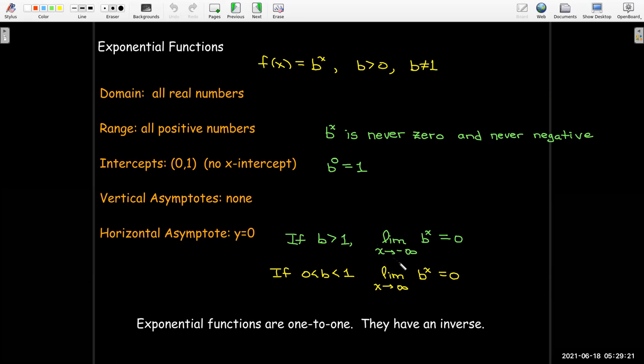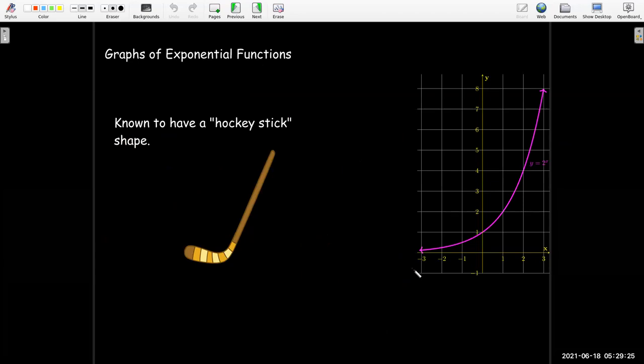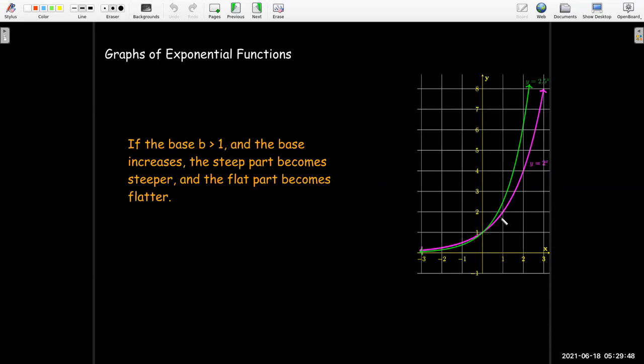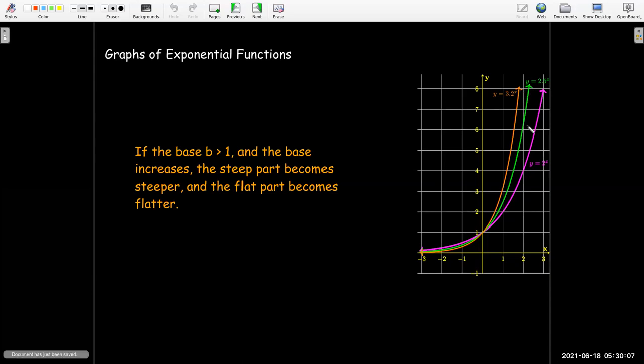The graphs of exponential functions, we think of as having this hockey stick shape. Here's the graph of an exponential function, y equals 2 to the power of x. If the base is bigger than 1, and I make the base bigger, the result on the graph is that the steep part of the graph, the handle of the hockey stick, becomes even steeper, and the flat part gets even flatter. If I go from 2 to 2.5, you can see that. If I go to 3.2, the steep part becomes even steeper or rises even more quickly, while the flat part is even flatter.